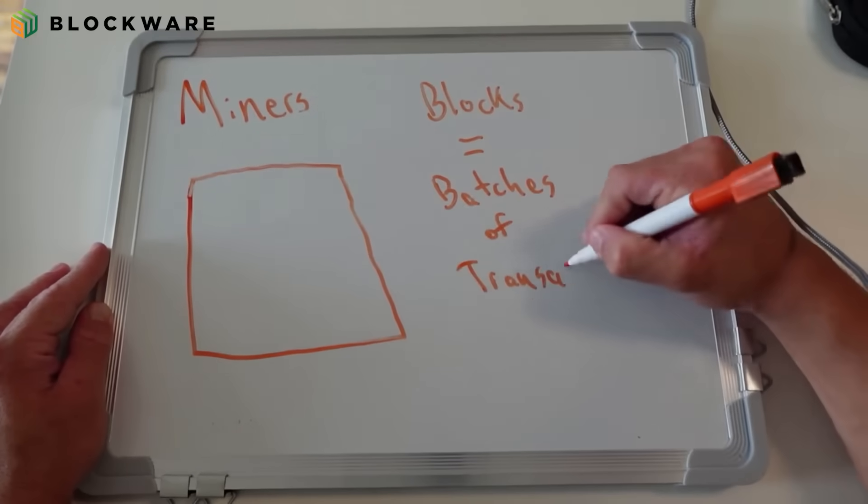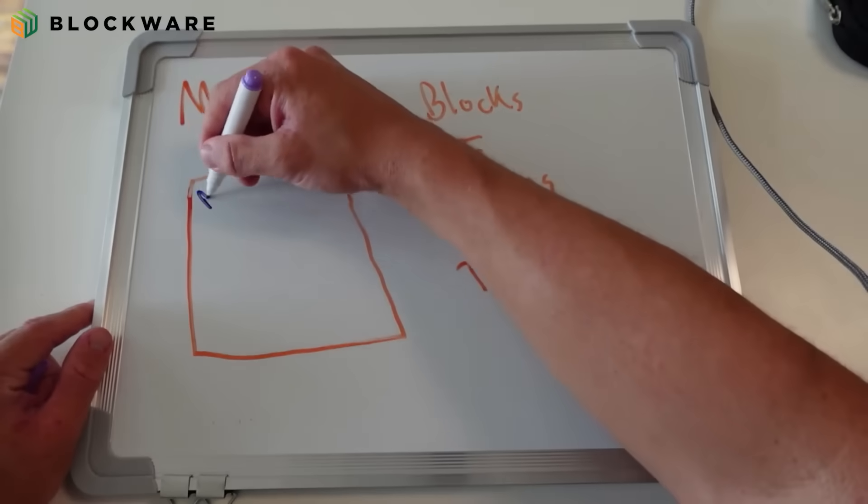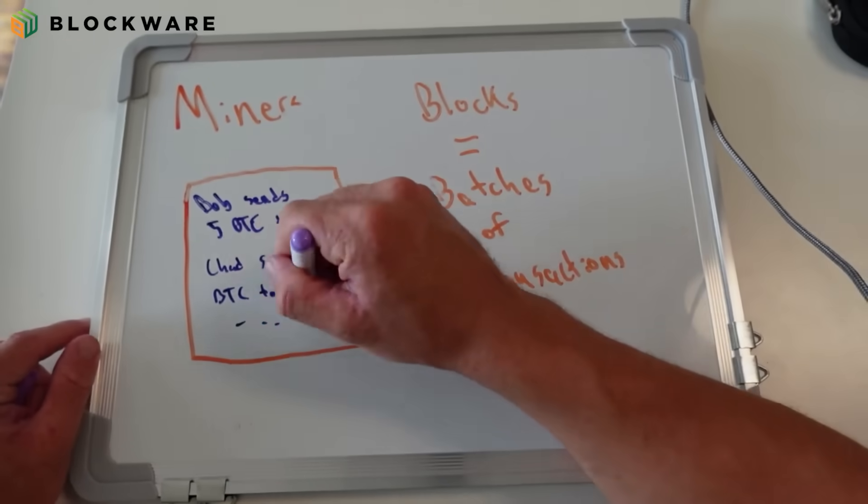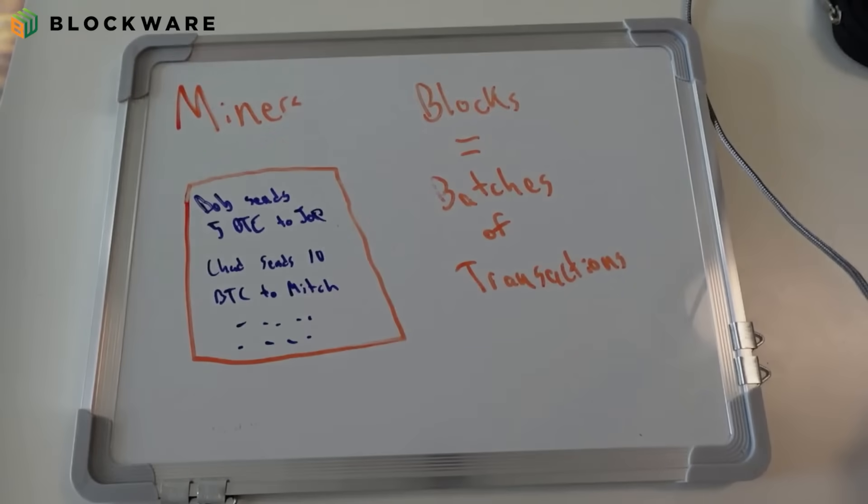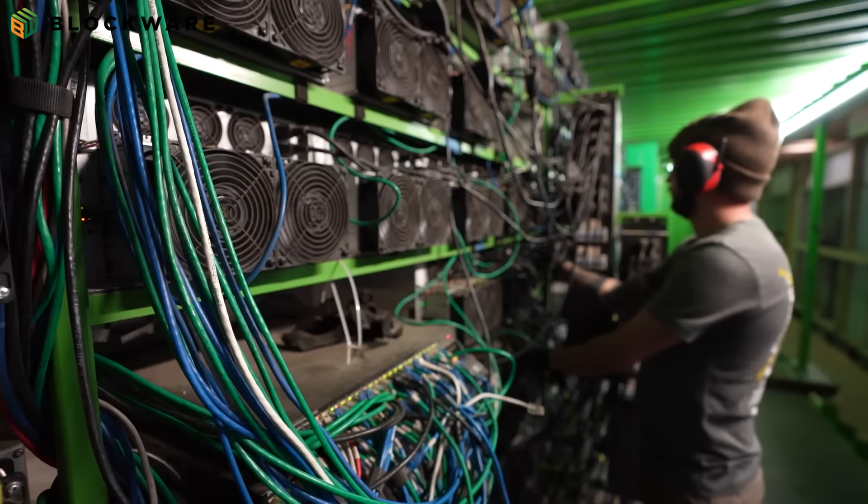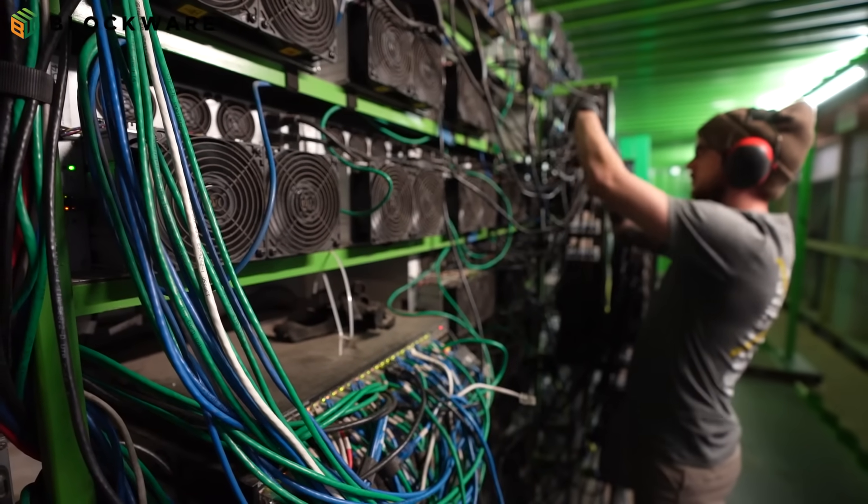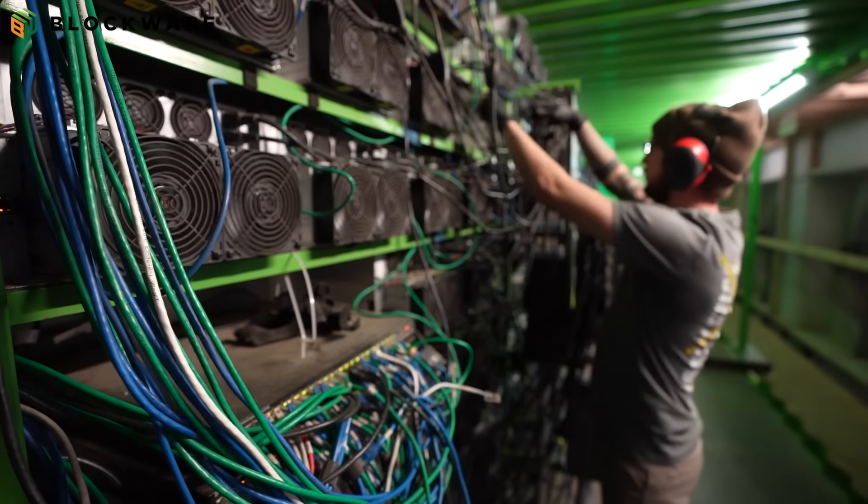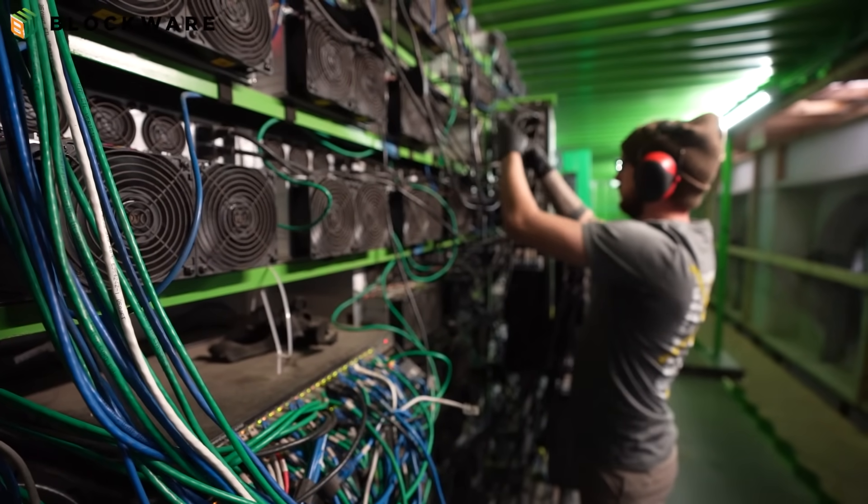Miners play a critical role in the Bitcoin network by adding new transactions to the blockchain. They do this by grouping transactions into batches known as blocks. In order to add new blocks to the blockchain, miners must use an immense amount of computational power and real-world physical energy.